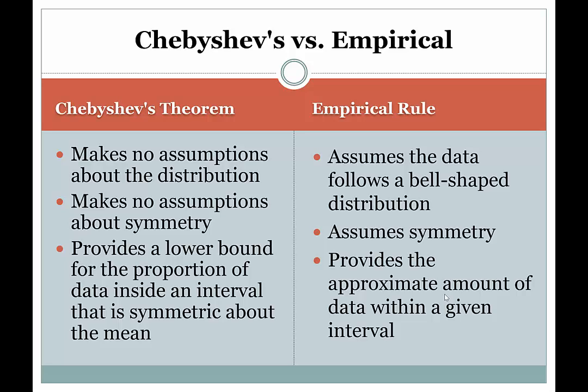The big things to remember: the empirical rule assumes bell-shaped curves, while Chebyshev's theorem makes no assumption whatsoever about that. The empirical rule gives us approximate answers, whereas Chebyshev's theorem gives us lower bounds — minimum amounts of data that belong to given intervals.